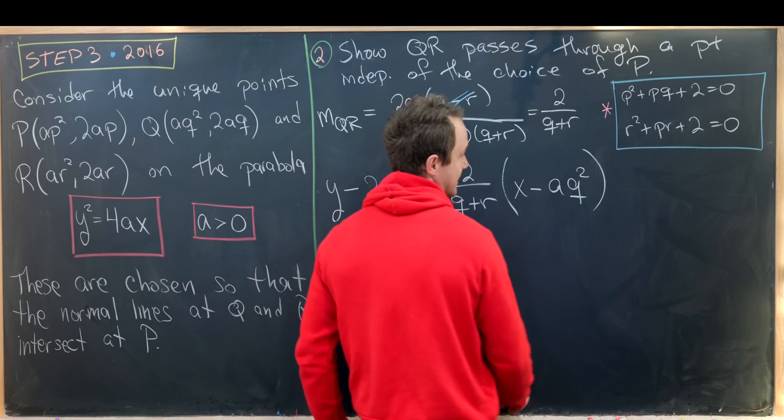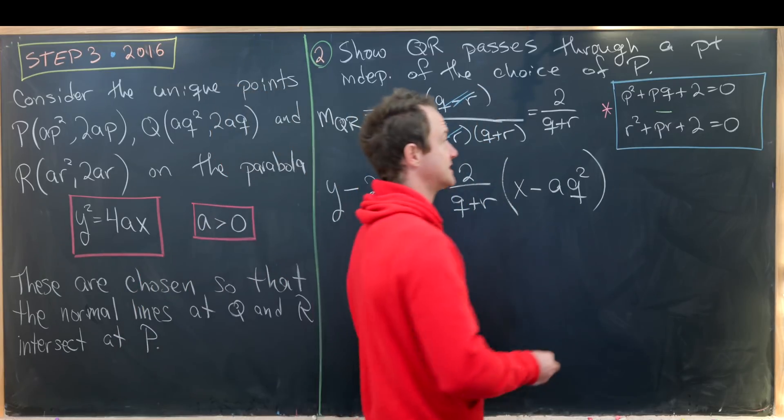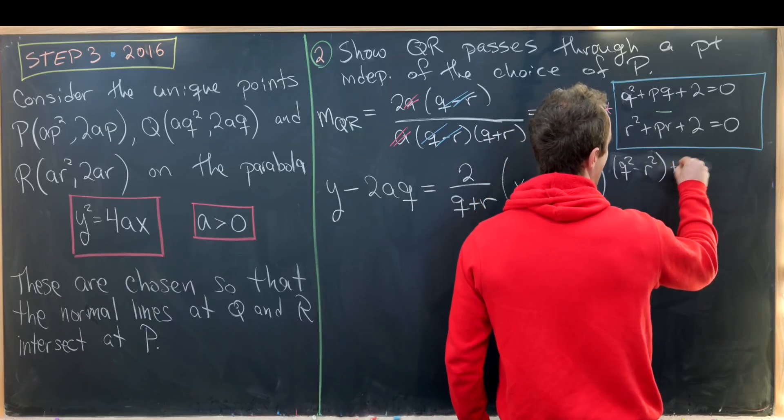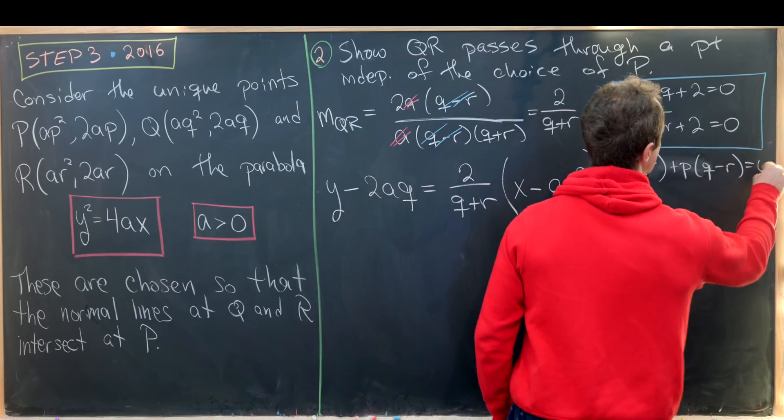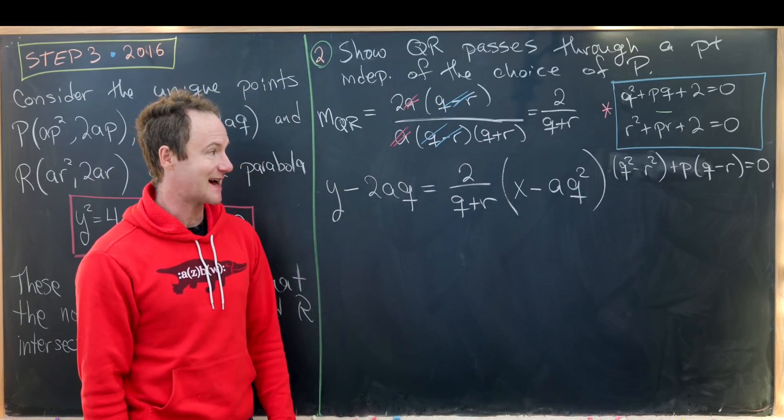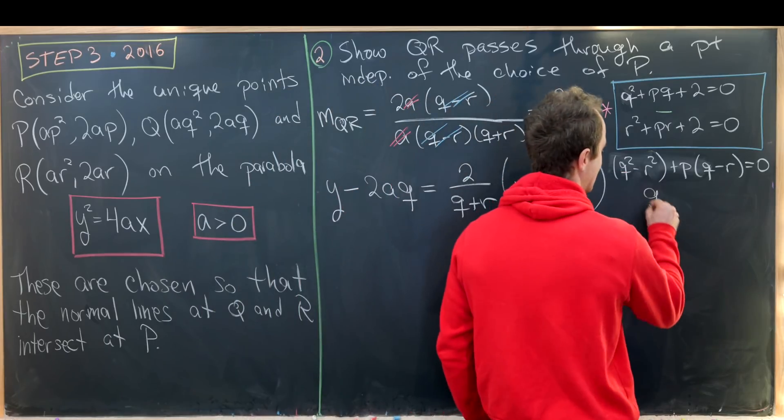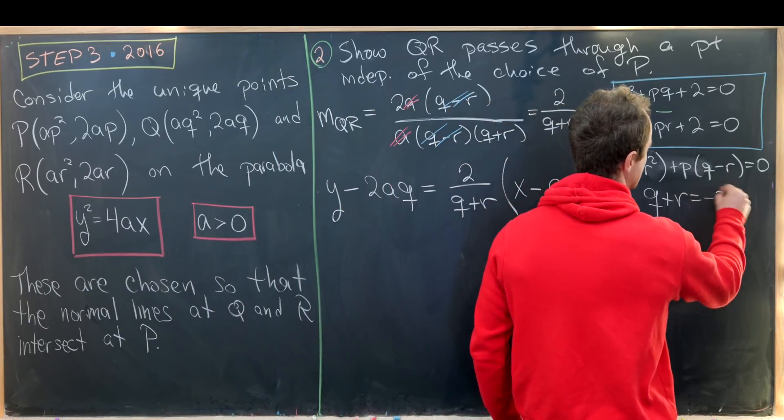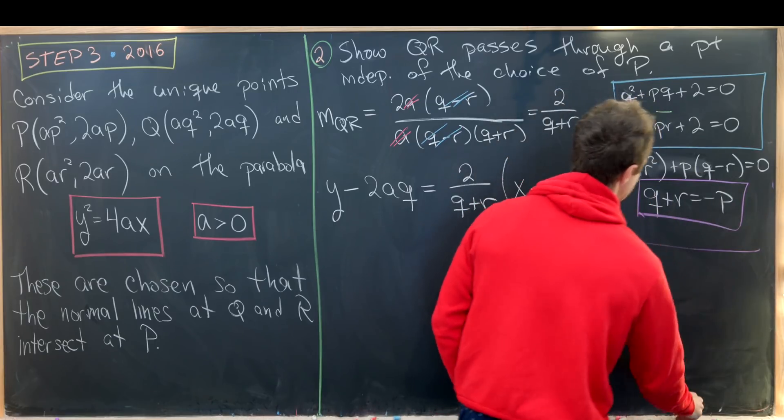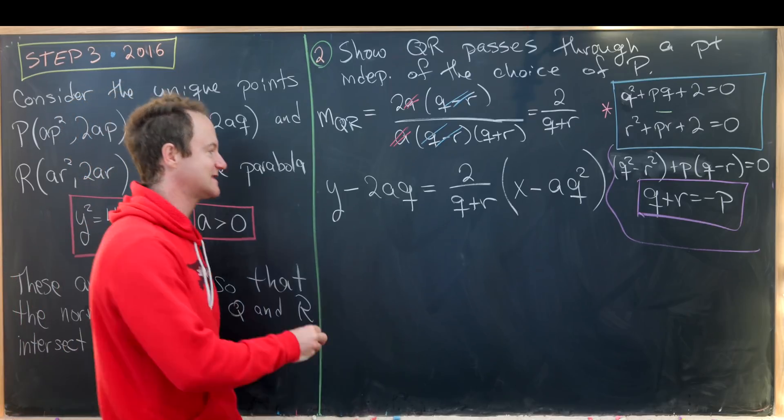So let's take the difference of these two equations that we constructed before and see what we get. We'll have Q² - R² + P(Q-R) = 0. But now we can divide this entire thing by Q-R given the factorization and that'll leave us with Q+R = -P after a few fairly elementary steps. That means we can replace this Q+R with -P.